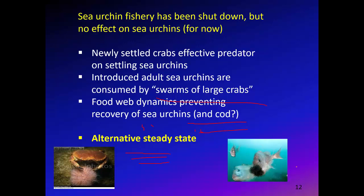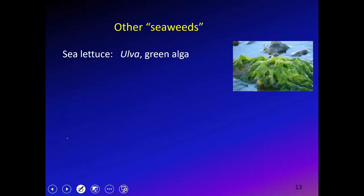So as cod were overfished and removed from the ecosystem, we now have a new alternative steady state — unfortunately one without large cod populations. There's still concern about the sea urchin population and the fishery was shut down when managers saw it was being decimated, but it hasn't recovered. Here's just a picture of a cod eating a sea urchin, and also an adult crab feeding on a sea urchin.